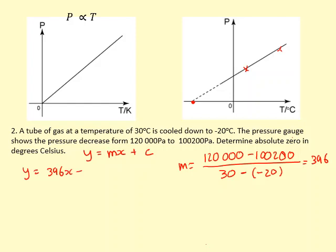And then I'm going to use that information to find the y-intercept. So I'll use this first data point. That gives me a c of 108120.